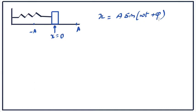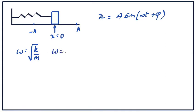Omega and phi are also constants. We will see what omega and phi mean. For now, we know that omega is equal to root k by m, for a spring of constant k and a block of mass m. And in the case of the simple pendulum, omega is equal to root g by l. Notice that omega is determined by the properties of the system, independent of what the amplitude is going to be.